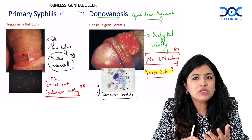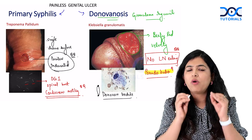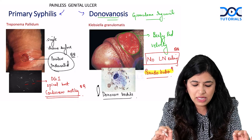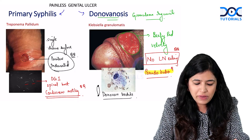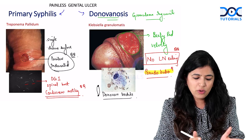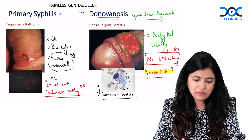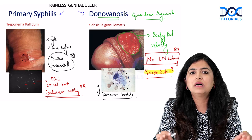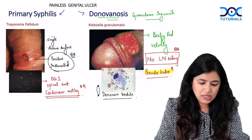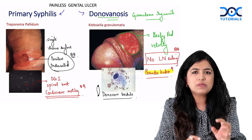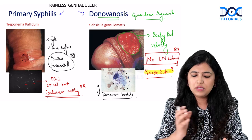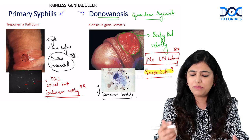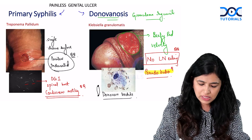Not just the image of the ulcer but also the image of what you see in the smear are very important. Syphilis will be a well-defined small ulcer with a clean surface. Donovanosis will have this exuberant granulation tissue which gives it a beefy red appearance.